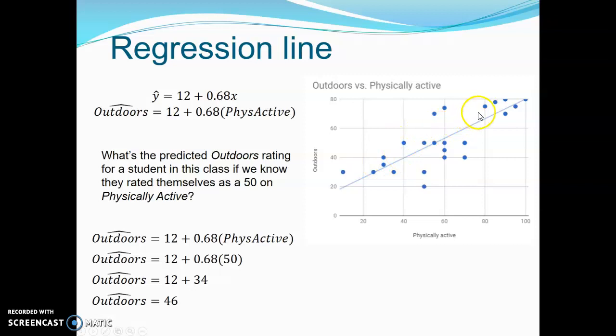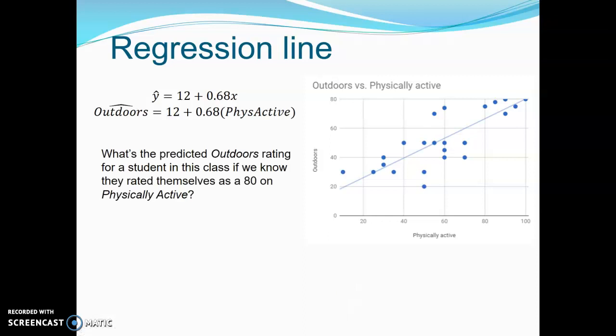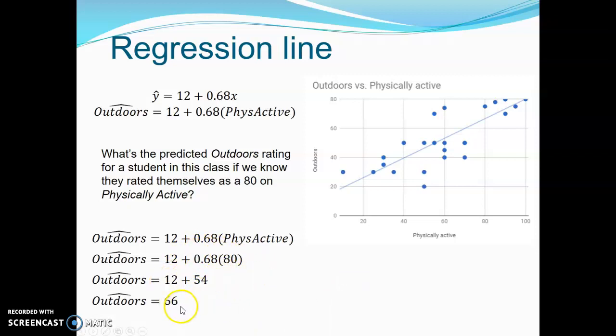And you can see the students who actually did rate themselves as a 50, well they ranged. One of them was down here at 20, 31, a little above 50 maybe. So on average we'd think that they'd be about a 46. However, it really depends how good our regression equation is, and that goes all the way back to the r squared from correlation. The higher the r squared value, the more accurate this prediction is going to be. Let's try another one. So what if someone rated themselves as an 80 on physically active? Go ahead and pause this and give it a try. What would be their predicted outdoors rating? Okay, there's our original equation. We'd put in 80 for physically active, multiply these two terms together, and then finally add these to get 66. So if they had a physically active score of 80, we would predict their outdoors score was 66. And again, we can see this. Here's the 80. We follow that up to the prediction line, the regression line, trend line. All of this is the same. It's that blue line right there. We follow that across, and that should be at about 66, which we see that it is.